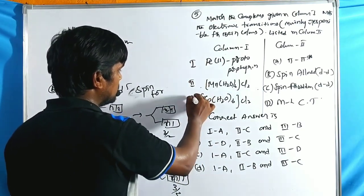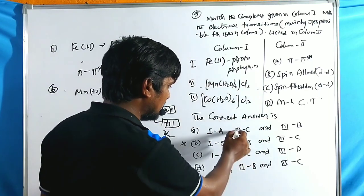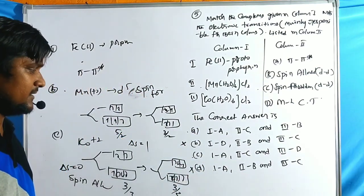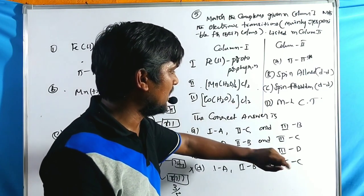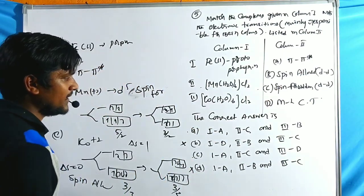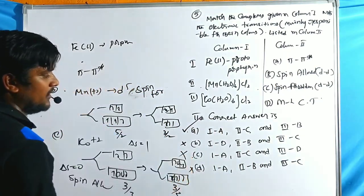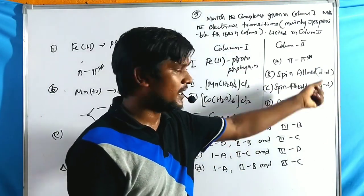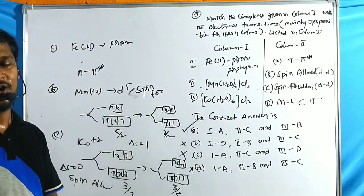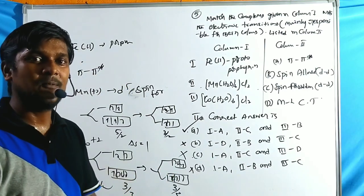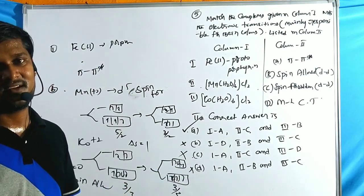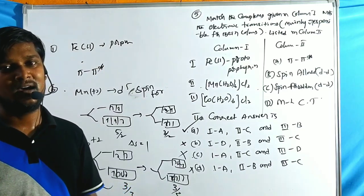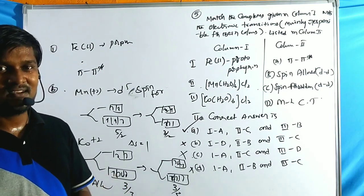Continuing the matching: two belongs to C (spin forbidden for Mn²⁺). For Co²⁺ (d7), the transition is spin-allowed d-d. Summarizing: Fe²⁺ porphyrin → (1) π→π*, Mn²⁺ → (2) spin forbidden d-d, Co²⁺ → (3) spin-allowed d-d. Option A is the correct match. These problems cover spin allowed/forbidden, Laporte allowed/forbidden, and ΔJ = 0, ±1 selection rules for electronic transitions.